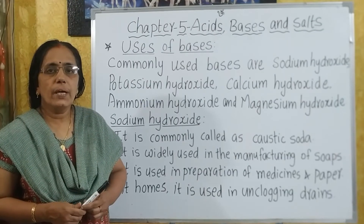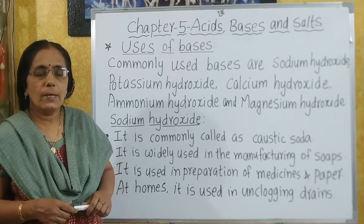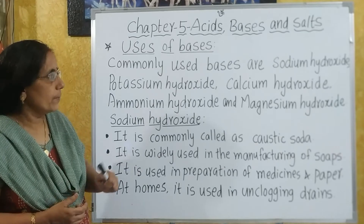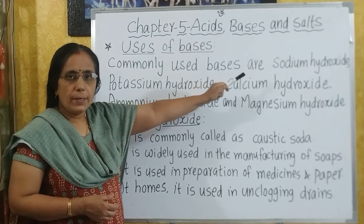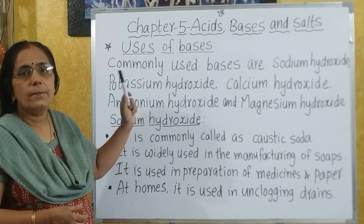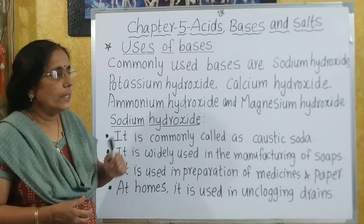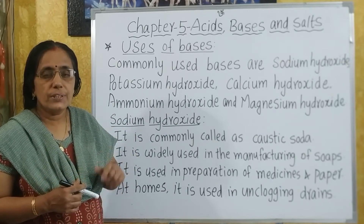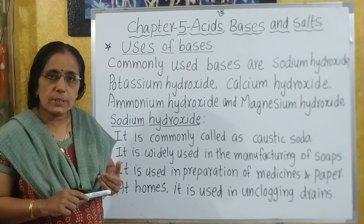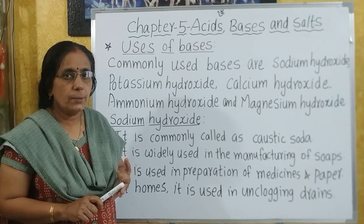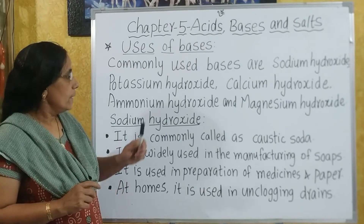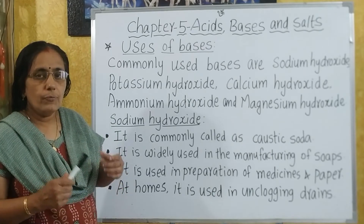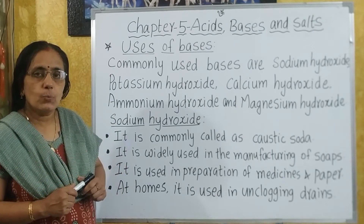The next topic we are going to discuss is the uses of bases. First, we will see the names of some commonly used bases: sodium hydroxide, potassium hydroxide, and calcium hydroxide. These three hydroxides are soluble in water and are alkalis. Ammonium hydroxide and magnesium hydroxide are weak bases. Now we will see the uses of each base one by one.